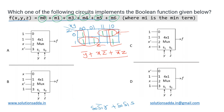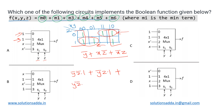Looking at option A, its select bits are y and z. So the output is evaluated as: y̅z̅ times the first input (which is 1), plus y̅z times the second input (which is 1 again), plus yz̅ times the third input (which is x), plus yz times the last input (which is x̅).